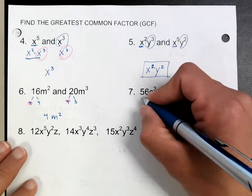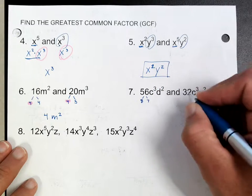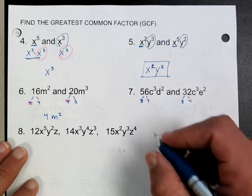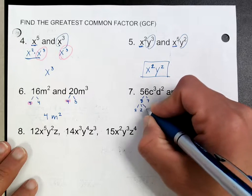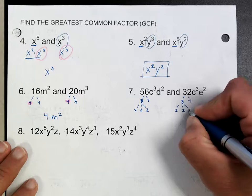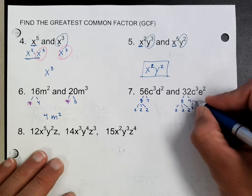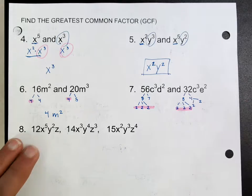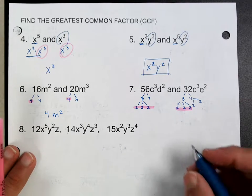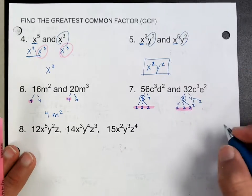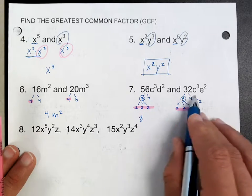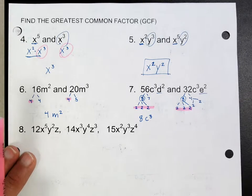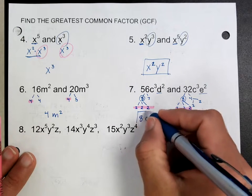For example with 56: I know this is 8 times 7, and 32 is 8 times 4. If you break it down further: 56 is 2 times 2 times 2 times 7, and 32 is the same base factors. What do they have in common? Three of those twos — so the greatest common factor would be 8, which you can see anyway since both have an 8. You have an 8 in common, and now pick the smallest of the letters — in this case that would be c cubed. And that's it because they don't have anything else in common. So that would be my greatest common factor.